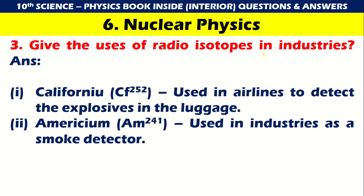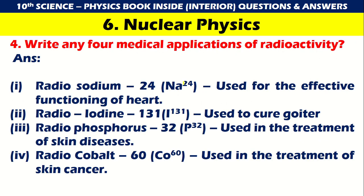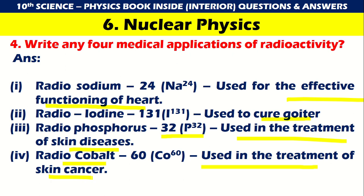Give the use of radioisotopes in industries: Californium (CF-252) is used in airlines to detect explosives in luggage; Americium is used in industries as a smoke detector. Medical applications of radioactivity: Radiosodium (Na-24) is used for the effective functioning of the heart; Radio iodine (I-131) is used to cure goitre; Radio phosphorus (P-32) is used in the treatment of skin diseases; Radio cobalt is used in the treatment of skin cancer.